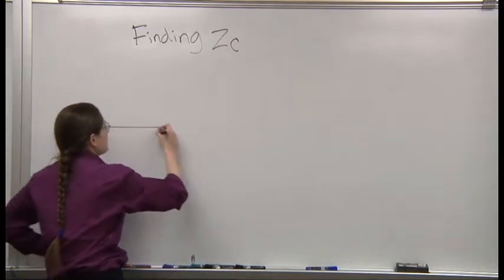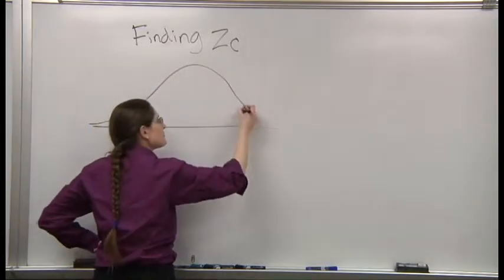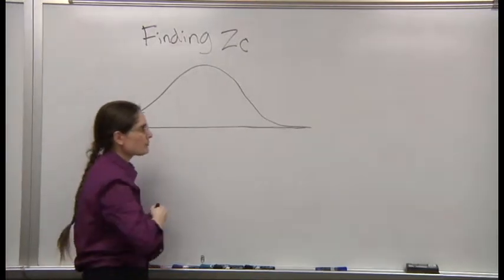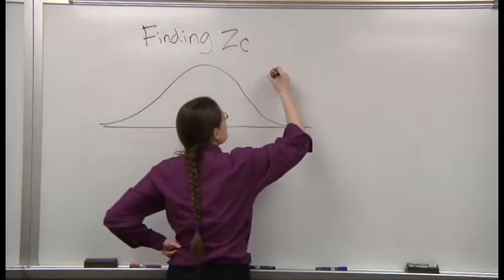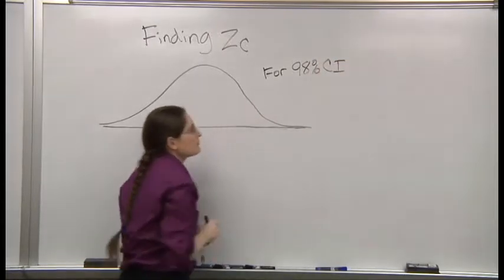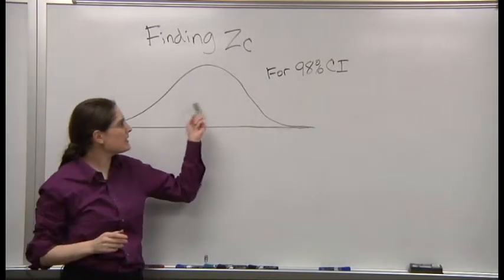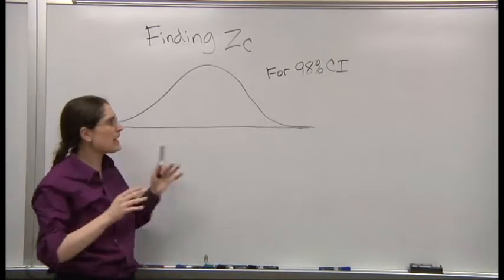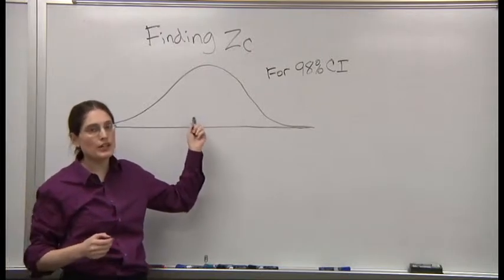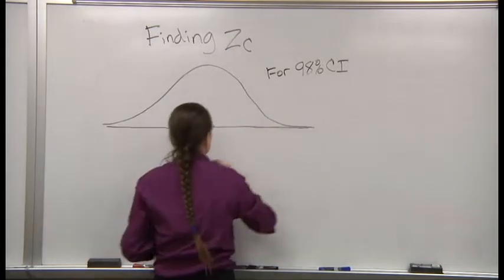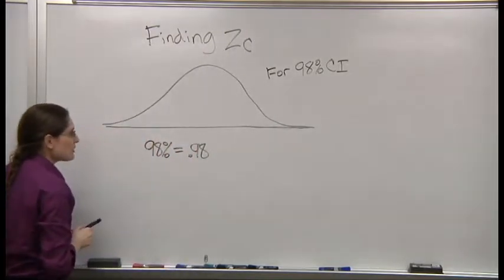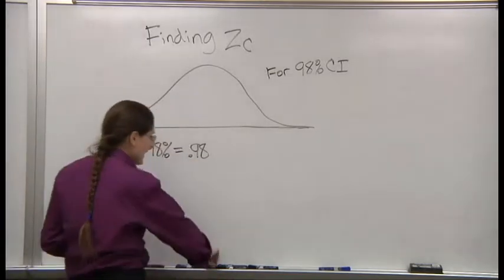Let's consider the normal distribution. Now, let's say I want to find a 98% confidence interval. So we can convert 98 to a decimal, 0.98. It's the area in the middle.